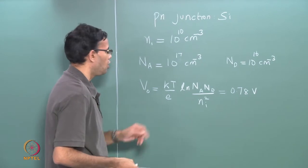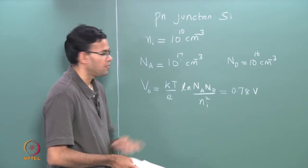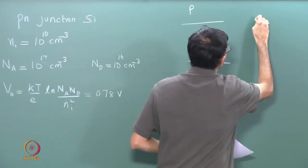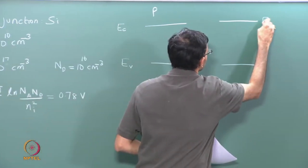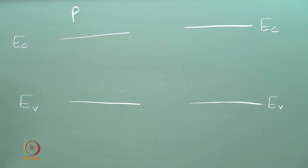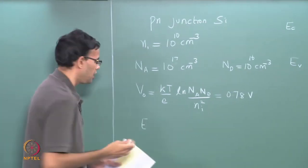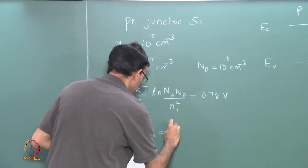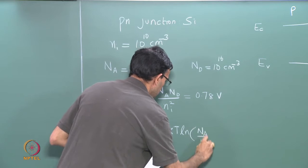What I want to do is to link the contact potential to the location of the Fermi levels in the p and the n-side. Let us consider the p-side separately and the n-side separately. They are both silicon, so the band gap is the same. To calculate the position of the Fermi level, we go back to the formula that we used in the case of extrinsic semiconductors: E_fp minus E_fi equals minus kT ln of n_a over n_i.